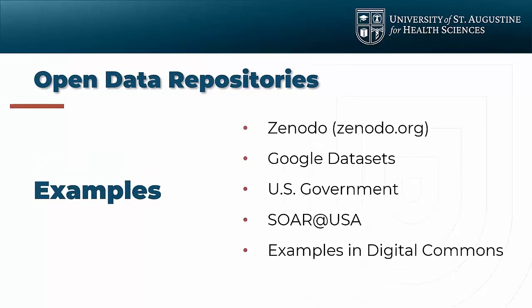I want to point to a couple of examples. Zenodo is a website that does a lot of scholarly sharing — open sharing of research publications — and they also do a good job with data sets. One thing I like about Zenodo is that they enable the use of open licenses, so I'm going to point to that one specifically. Google has a specific data set indexing service where they access multiple registries of data sets — anything labeled as a data set in a government or university repository gets pulled into Google Data Sets, so you can search those specifically.